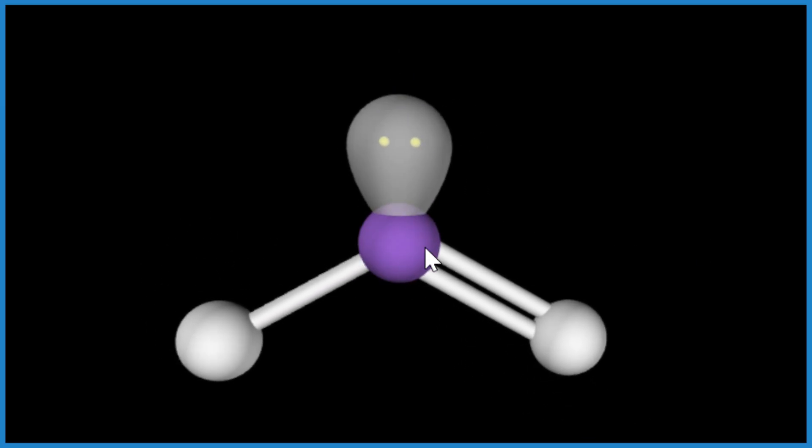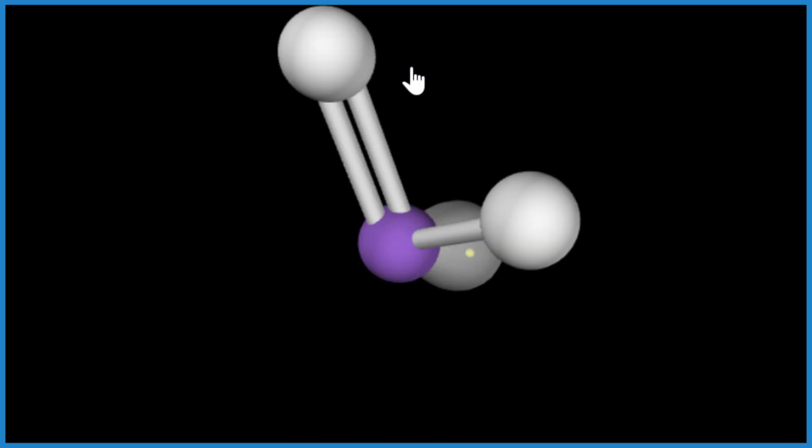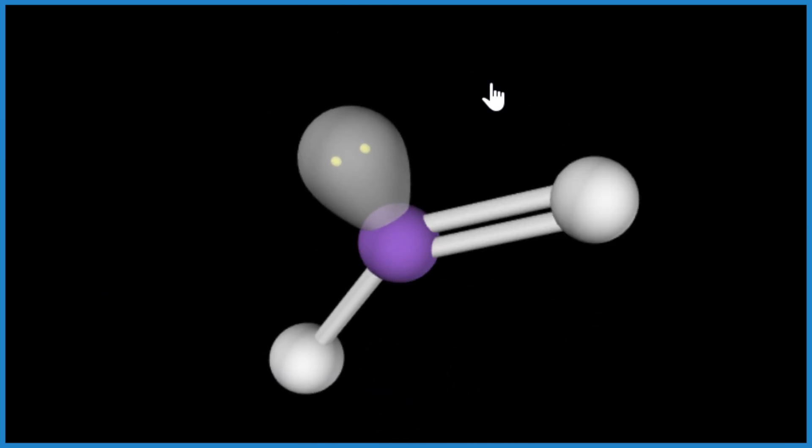And this gives us what we call a bent molecular geometry. So for ozone, that lone pair pushes it down, we end up with this bent molecular geometry. Let's go back.